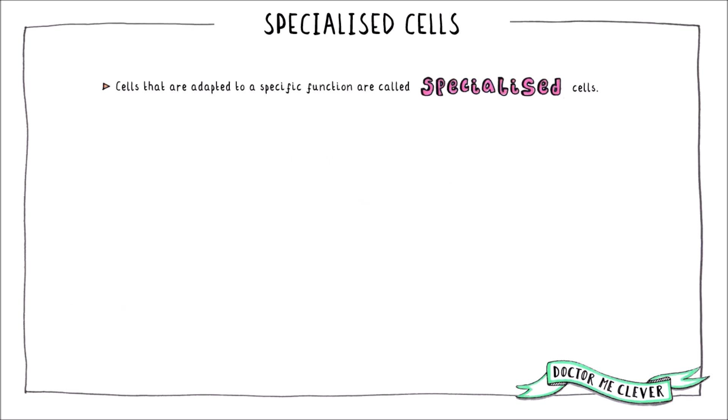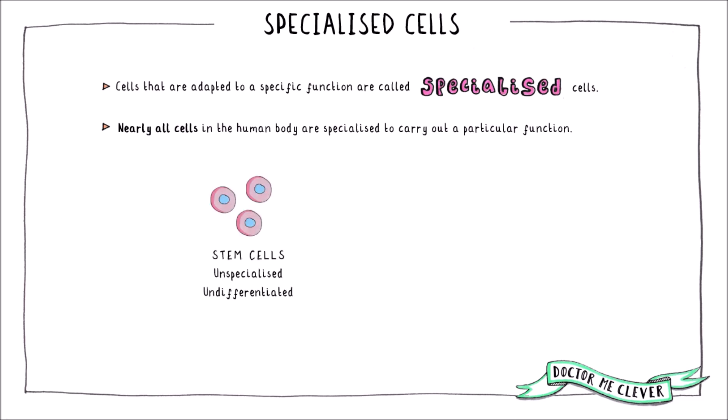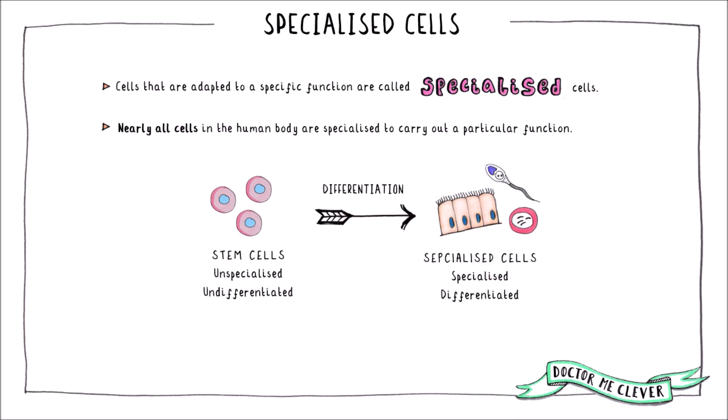Cells that are adapted to a particular function are called specialised cells, and nearly all the cells in your body are specialised, bar stem cells. Stem cells are undifferentiated and unspecialised. When they receive instructions from the environment, they switch certain genes on and off and differentiate to become specialised for a particular function. For example, a stem cell might develop a tail to enable it to swim to a female egg, or develop cilia allowing it to move substances.